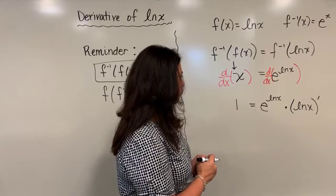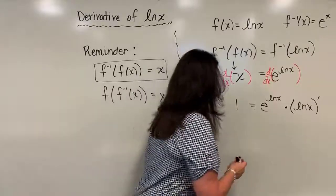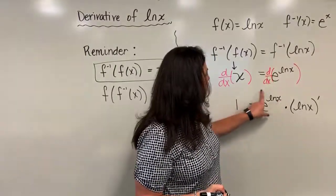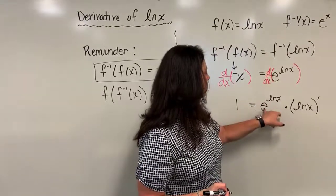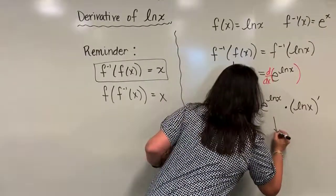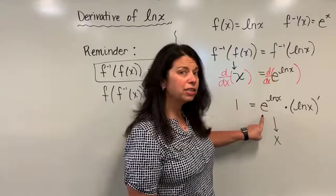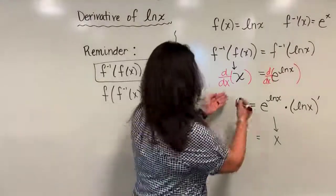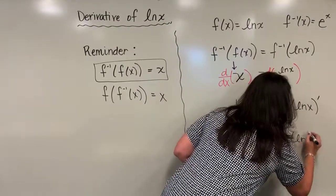Now here's a key piece: e to the natural log x — via the one-to-one property of exponentials and logs, when the base of the exponential matches the base of the logarithm, we get back just the argument. So e to the natural log of x simplifies to just x. I still have 1 on the left-hand side, and I still have the unknown derivative of natural log x on the right, now multiplied by x.